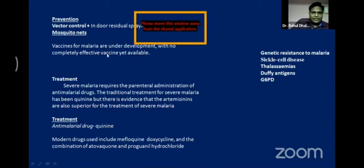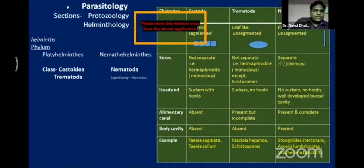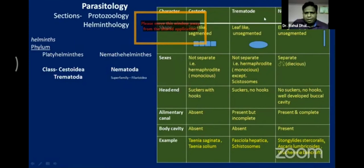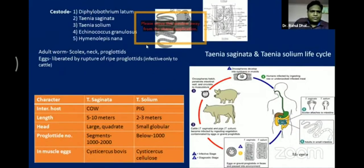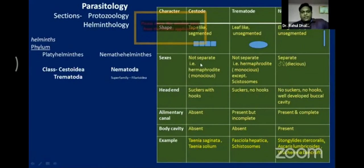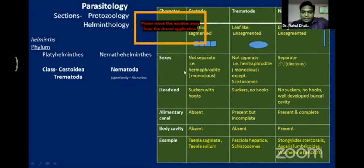Now we turn to the second part of parasitology: helminthology — worms. There are three types: cestodes, trematodes, and nematodes. An important comparison table: Cestodes are segmented and tape-like; trematodes are leaf-like and unsegmented; nematodes are long, cylindrical, and unsegmented. Sexes are not separated in cestodes and trematodes, but are separated in nematodes.